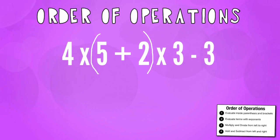Let's look at this final expression here. We're going to start with the P for PEMDAS and we're going to start with parentheses. Now we can see that there are parentheses here. So I'm going to do 4 times and then I'm going to do 5 plus 2 is 7 times 3 minus 3.